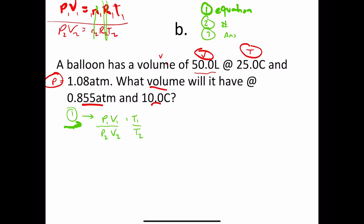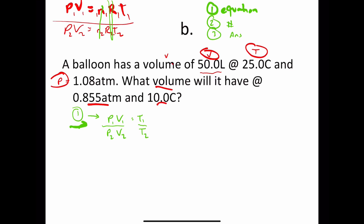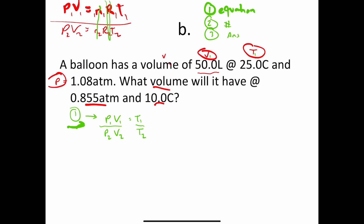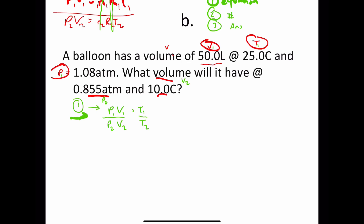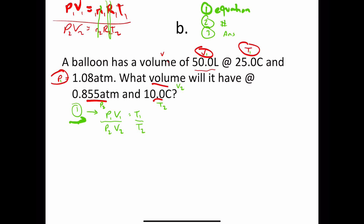So this is V1, this is T1, P1, and then we're looking for V2. Here we have pressure 2 and temperature 2. So we're looking for V2 — you could figure out a way to get V2 by itself and then plug everything in, or you can just plug in the numbers and solve. I'm going to show you both ways.